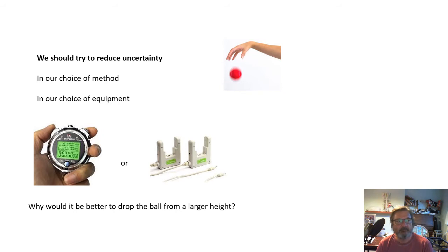For example with equipment, let's say I was measuring the time it takes for a ball to fall. So I'm dropping a ball and I want to know how long it takes to hit the ground. Now I could use a stopwatch or I could use light gates with a data logger. Now with the light gates there will be less uncertainty. Why? Because there'll be no human error, because we're timing it electronically. There'll be less uncertainty with the light gates, so they would be better.